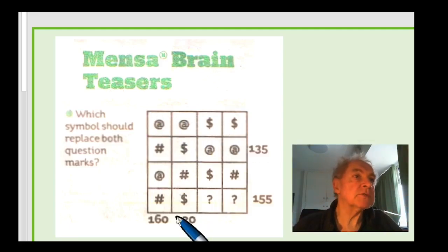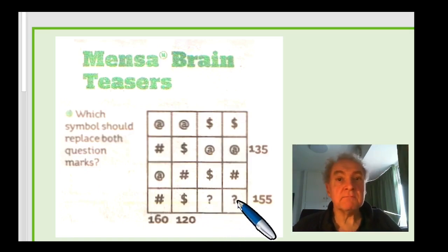It's got this grid of symbols in this instance, and you've got missing symbols where these question marks are. So you've got to decide which symbol should replace both question marks. It's the same one.